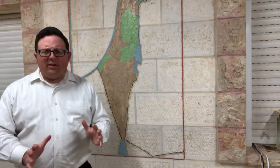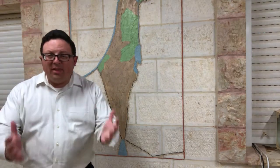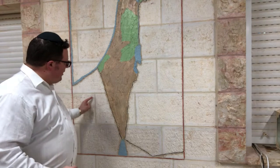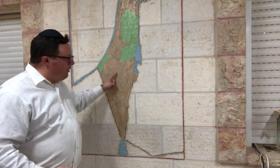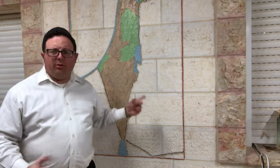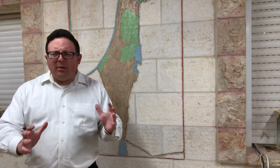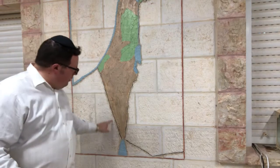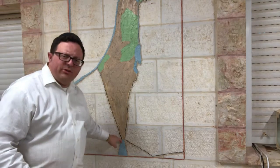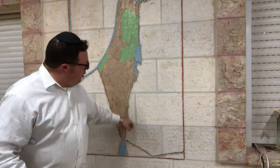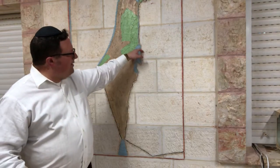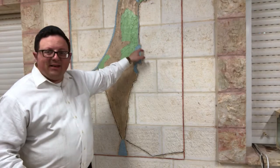So Hashem didn't want to take them there. But then Hashem should have taken them straight through here, straight through the desert into the Negev. But Hashem didn't do that. He took them all the way down here where the sea split, then all the way up here, past Yom HaMelech, the Dead Sea.